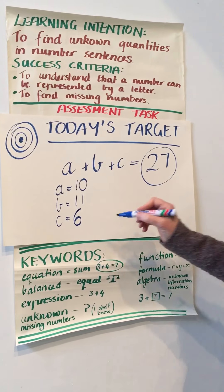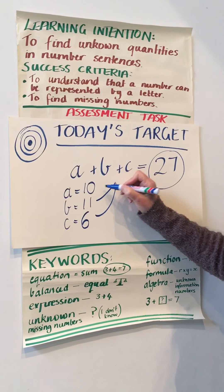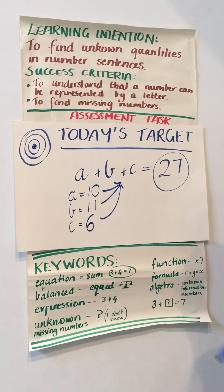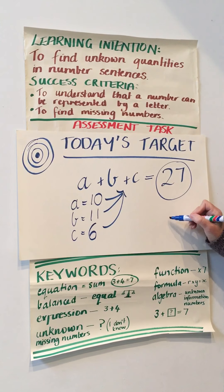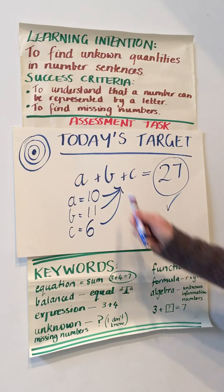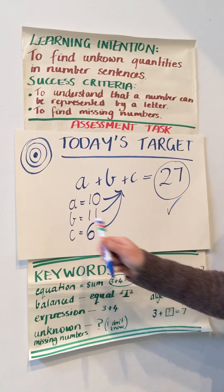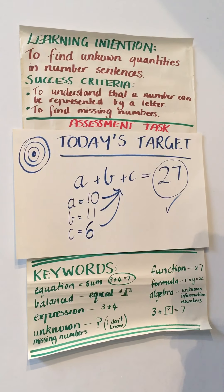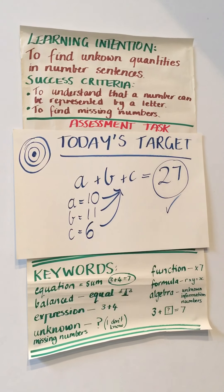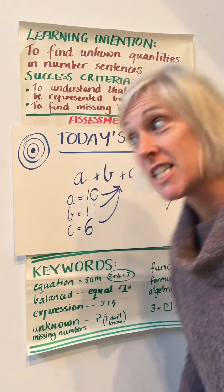So this then I go back and double check because that's what smart maths people do. 10 plus 11 plus 6 equals 27. Tick for me. So I've just shown you what A, B and C could possibly represent in this equation. That's what you're doing for your assessment task. Easy peasy, lemon squeezy.